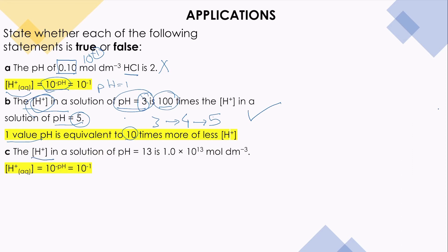Statement C: the concentration of hydrogen in a solution of pH 13 is 10 to the power 13. This is false. We already know the formula: concentration of hydrogen equals 10 to the power negative pH. If pH is 13, then the concentration of H⁺ should be 10 to the power negative 13, not 10 to the power positive 13. The only mistake is the missing negative sign.